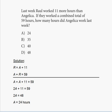Let the hours worked by Raoul be equal to R, and let the hours worked by Angelica be A. This way we can use mathematics to explain these sentences. It says last week Raoul worked 11 more hours than Angelica, so R is going to be A plus 11, because he worked 11 hours more.